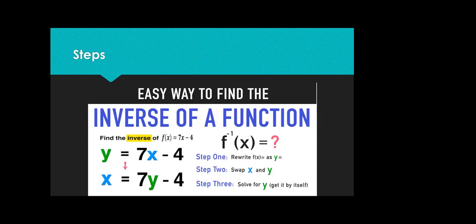This is an easy way to find the inverse of a function. Step one: rewrite f of x equals as y. Step two: swap x and y, meaning y equals 7x minus 4 becomes x equals 7y minus 4. Step three: solve for y and get it by itself. This is the inverse function of f of x equals 7x minus 4.